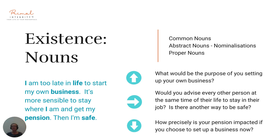Existence is so simple — it is just nouns. We have three types of nouns in the English language: common nouns, abstract nouns which are nominalizations, and proper nouns. Common nouns: pen, table, phone. Abstract nouns — anything you cannot put in a bucket: discussion, communication, identification, passion, love, joy, happiness. And proper nouns: people and places.